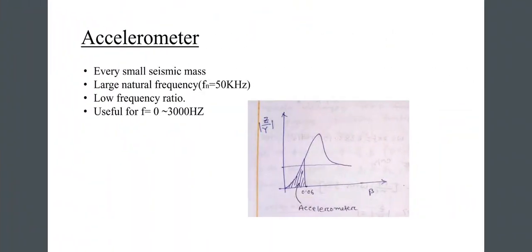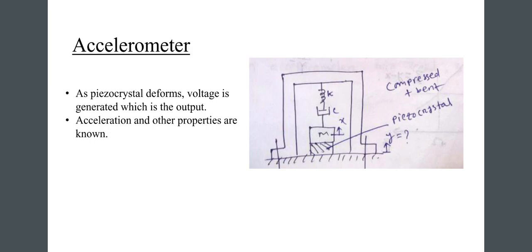Now for the accelerometer: it has a very small seismic mass and a large natural frequency — f_n can be up to 50 kHz — with a low frequency ratio. It is useful for frequencies from 0 to 3000 Hz. As a piezo crystal deforms, a voltage is generated which represents the output acceleration. The figure shows both the compressed and bending piezo crystal configurations at the bottom.